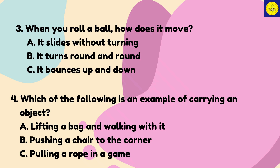Number 3: When you roll a ball, how does it move? A. It slides without turning. B. It turns round and round. C. It bounces up and down. Number 4: Which of the following is an example of carrying an object? A. Lifting a bag and walking with it. B. Pushing a chair to the corner. C. Pulling a rope in a game.